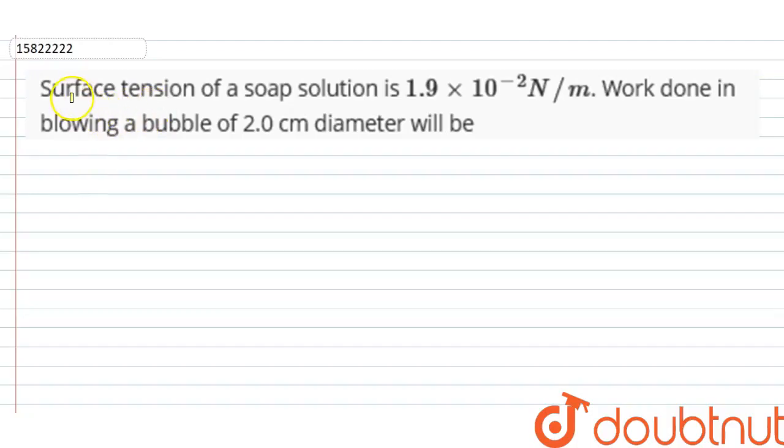So this question is given that the surface tension of a soap solution is 1.9 into 10 to the power minus 2 Newton per meter. Now, we are asked that the work done in blowing a bubble which diameter is 2 cm will be what. So basically, diameter is 2 cm, that means radius of the soap bubble, which is equal to d by 2, which is equal to 1 cm.